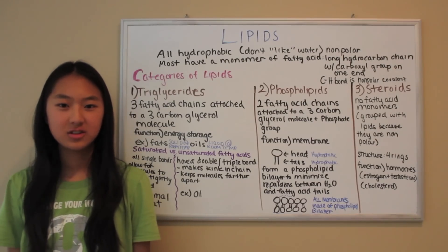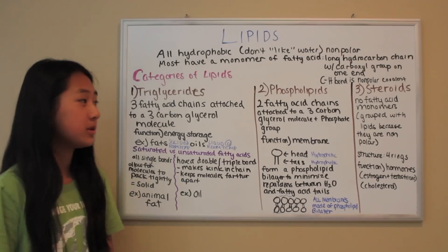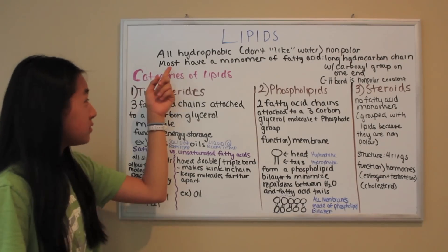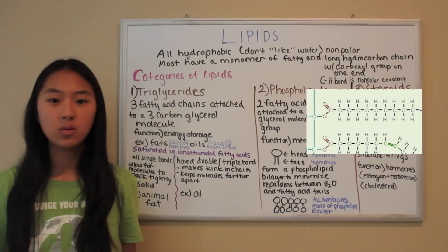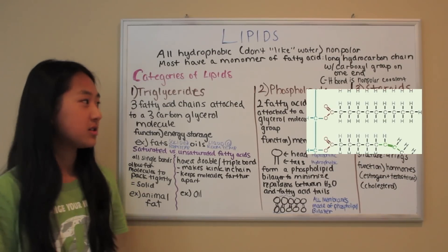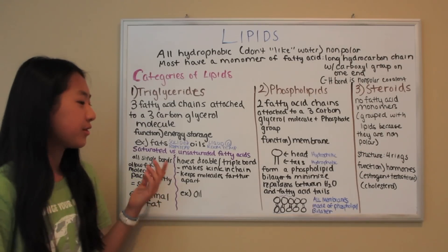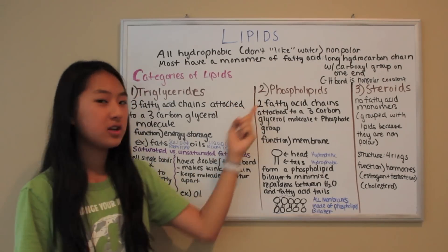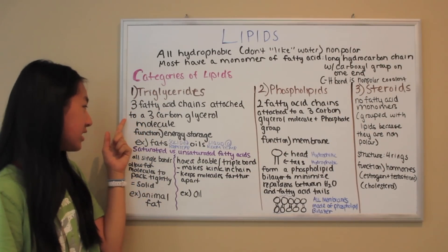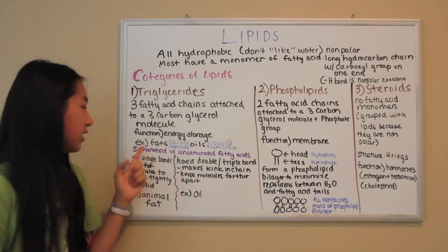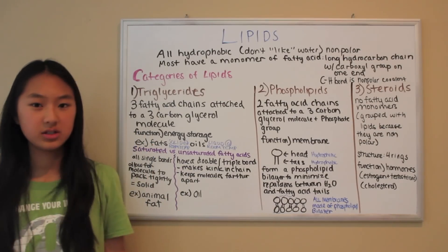The second type of macromolecules are called lipids. Lipids are hydrophobic, meaning they don't like water. Lipids are also nonpolar. Most lipids have a monomer of fatty acid, which is a long hydrocarbon chain with a carboxyl group on one end. The fatty acid chains have carbon-to-hydrogen bonds, which are nonpolar and covalent. There are three categories of lipids: triglycerides, phospholipids, and steroids. Triglycerides are three fatty acid chains attached to a three-carbon glycerol molecule, and their function is energy storage — for example, fats and oils are triglycerides.